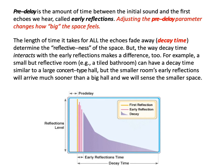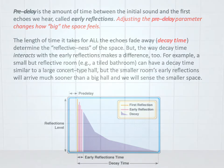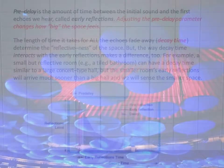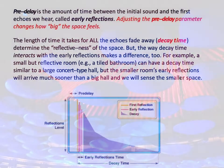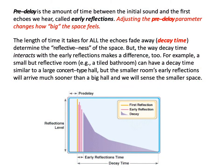Pre-delay is the amount of time between the initial sound and the first echo we hear, called early reflections. Adjusting the pre-delay parameter changes how big the space feels. A small but reflective room, like a tiled bathroom, can have a decay time similar to that of a concert hall, but the smaller room's early reflections will arrive much sooner, and we will sense a smaller space. By increasing the pre-delay parameter, we make the space sound bigger.